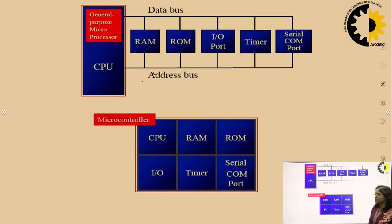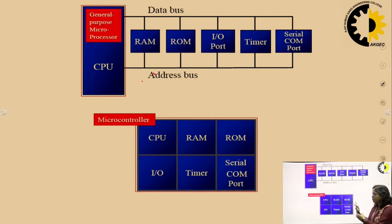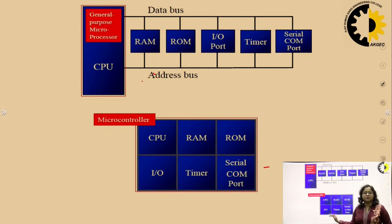Whereas a system consisting of a microcontroller consists of CPU, RAM, ROM, I/O, timer, and serial communication ports — all embedded on a single chip. That is why it is also called a system on a single chip or an embedded microprocessor.